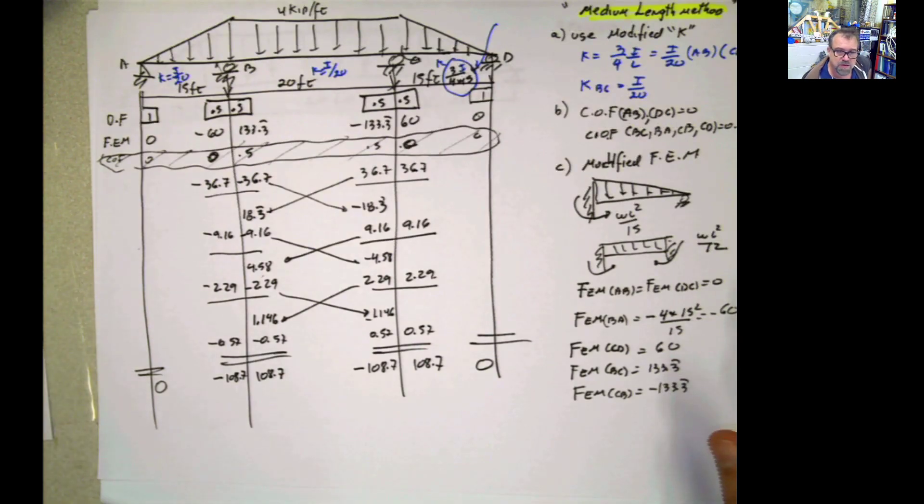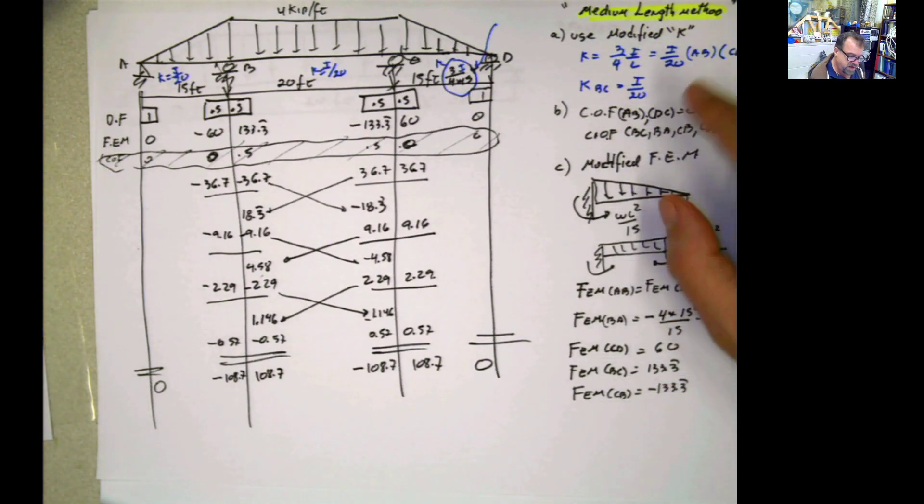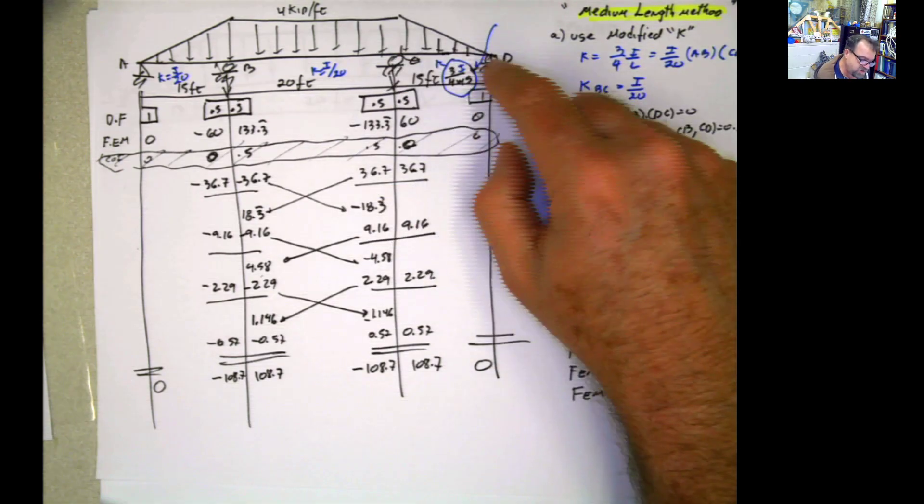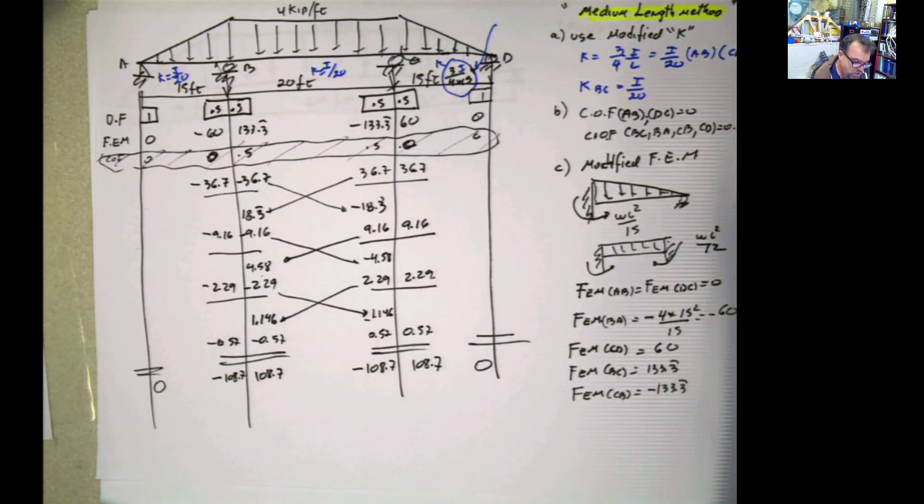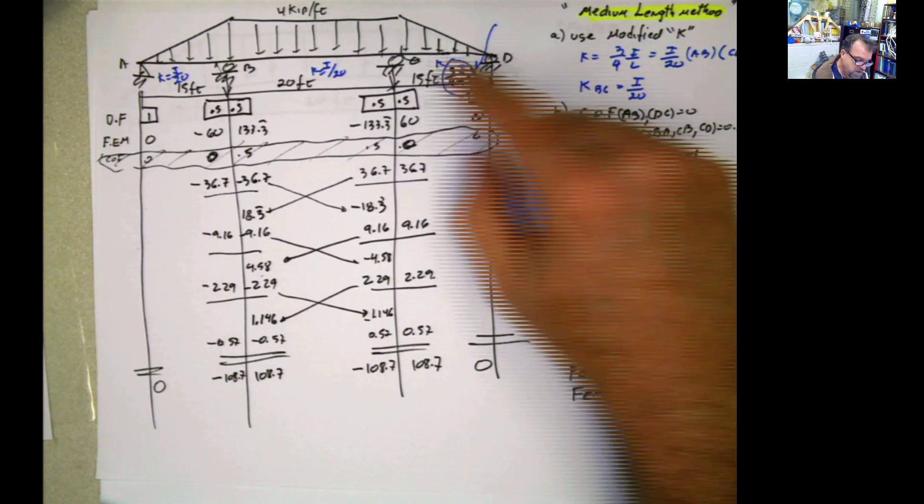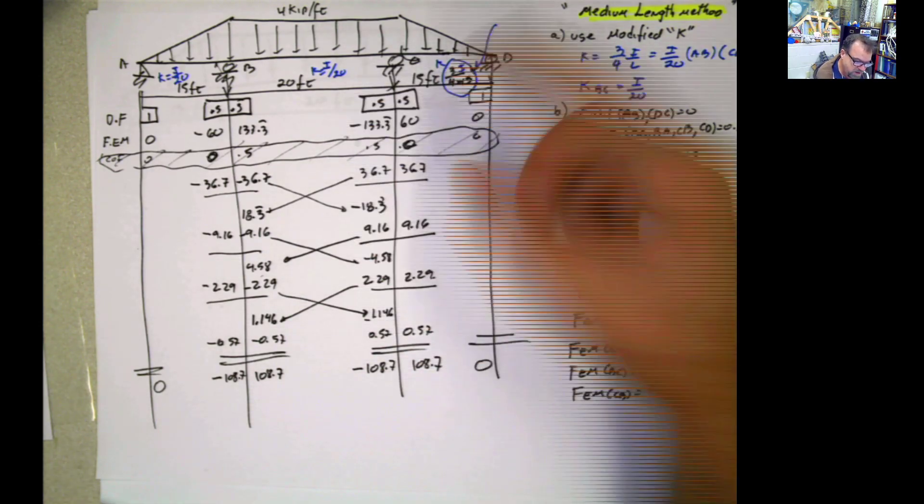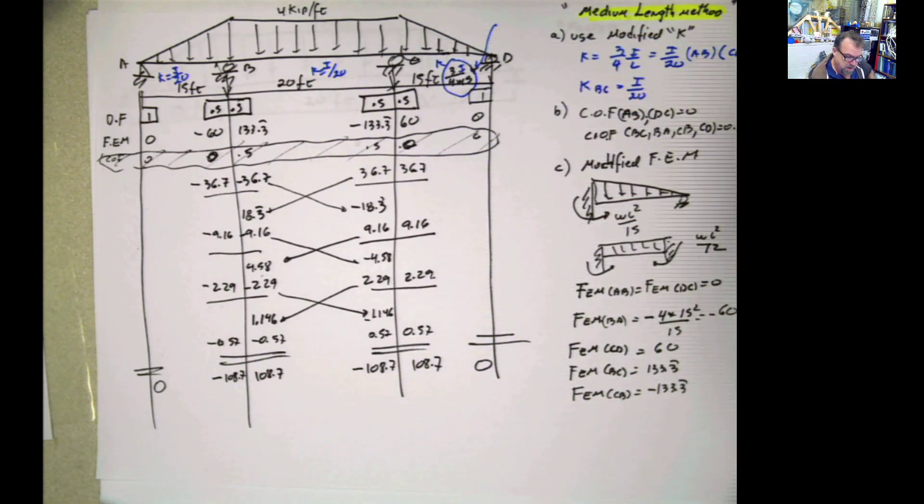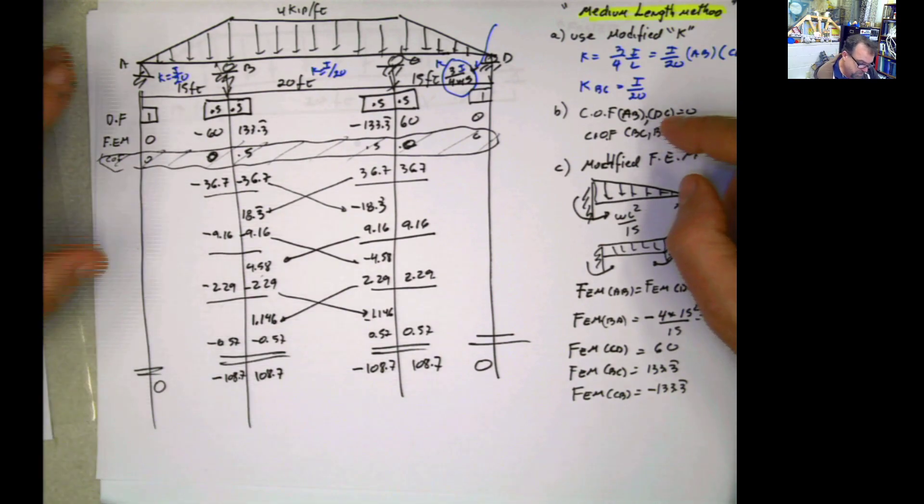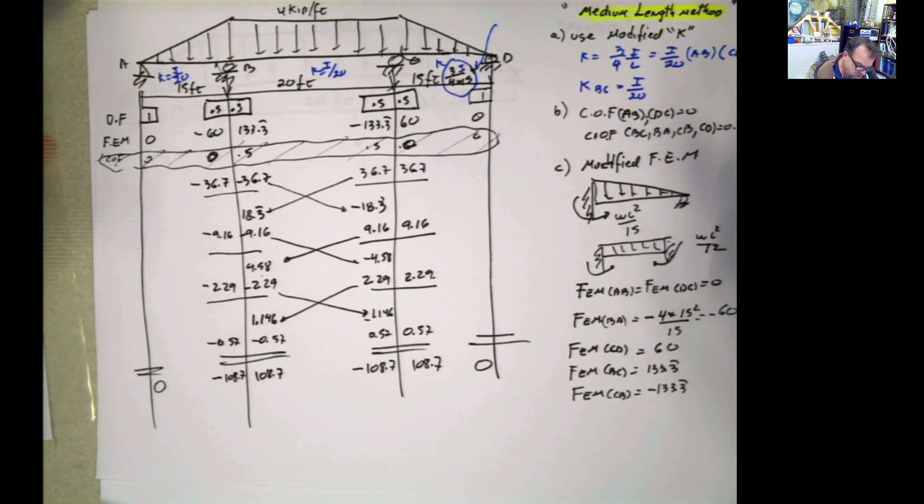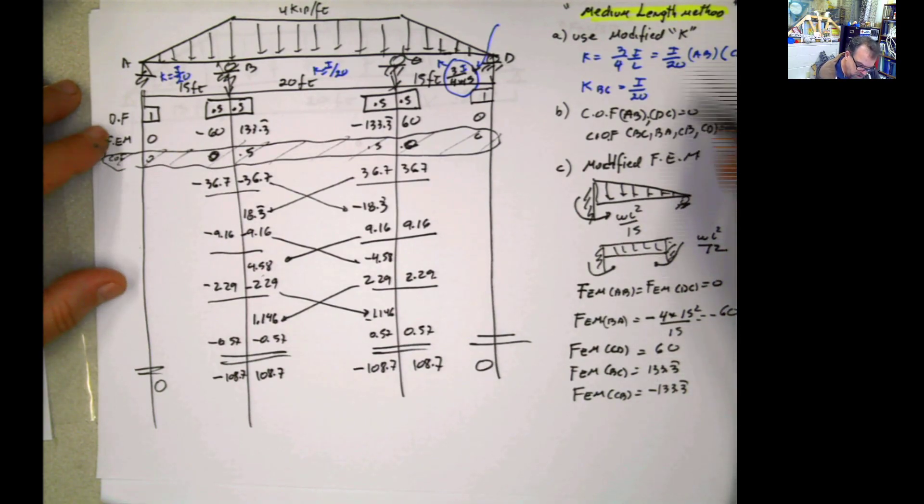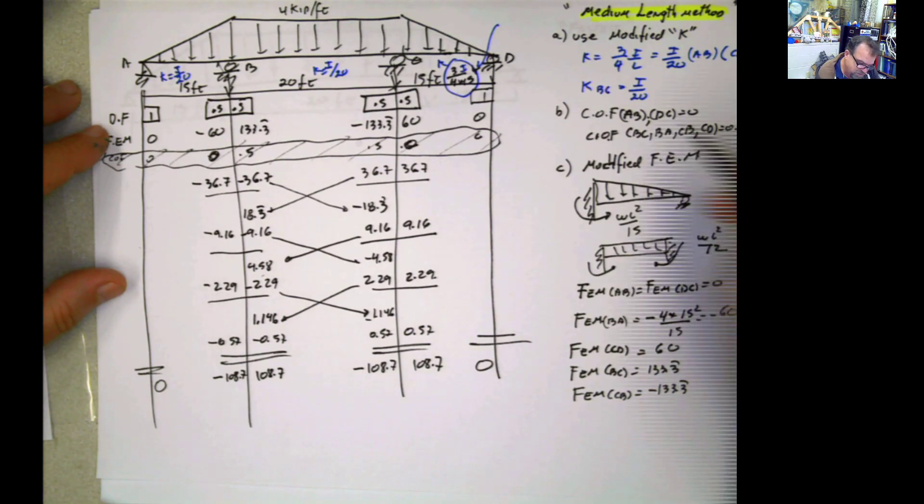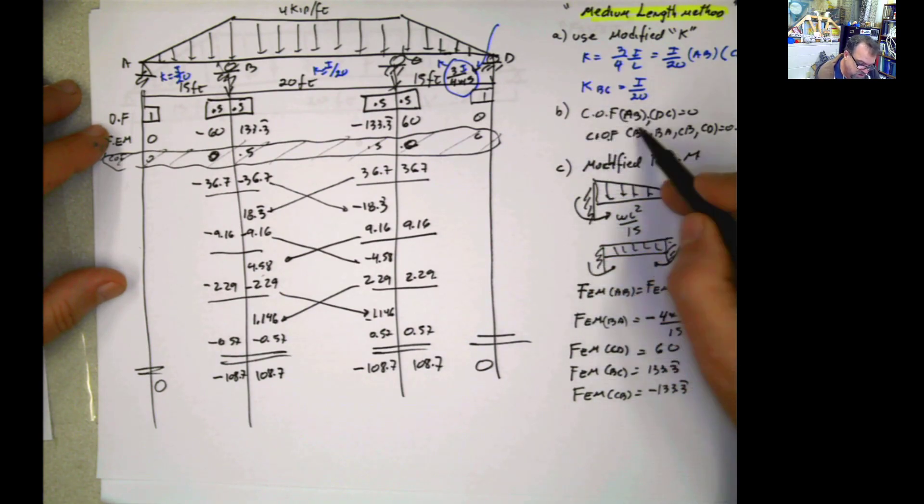Now, I solve it again using this. And then in this case, we use the modified k factor only because we say, OK, the far end is a hinge or pin. And in the introductory video, I demonstrated to you or I derived a formula for that modified k, which was 3 fourth i over l instead of being the regular i over l that we always use. And then the carry-on factor changed. I didn't calculate here. If you see that, I say now I'm realizing I put carry-on factor. This is not carry-on factor. This is distribution factor here anyway.